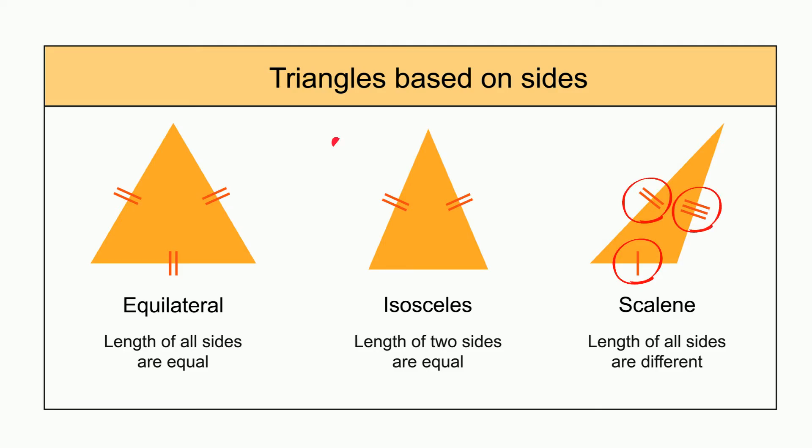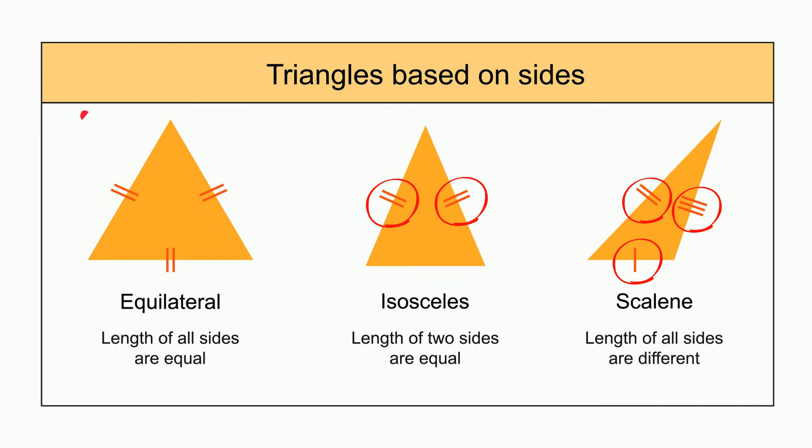An isosceles triangle has two congruent or equal sides. And an equilateral triangle has three congruent or equal sides.